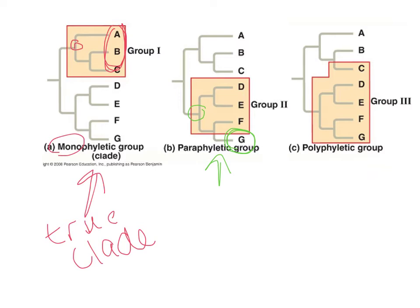A polyphyletic group does not contain one unique common ancestor for all of its members. Looking at group 3, taxon C does not share the common ancestor included in the group — it shares one much further back. So that's a polyphyletic group — poly referring to more than one common ancestor, while monophyletic comes from just one common ancestor.